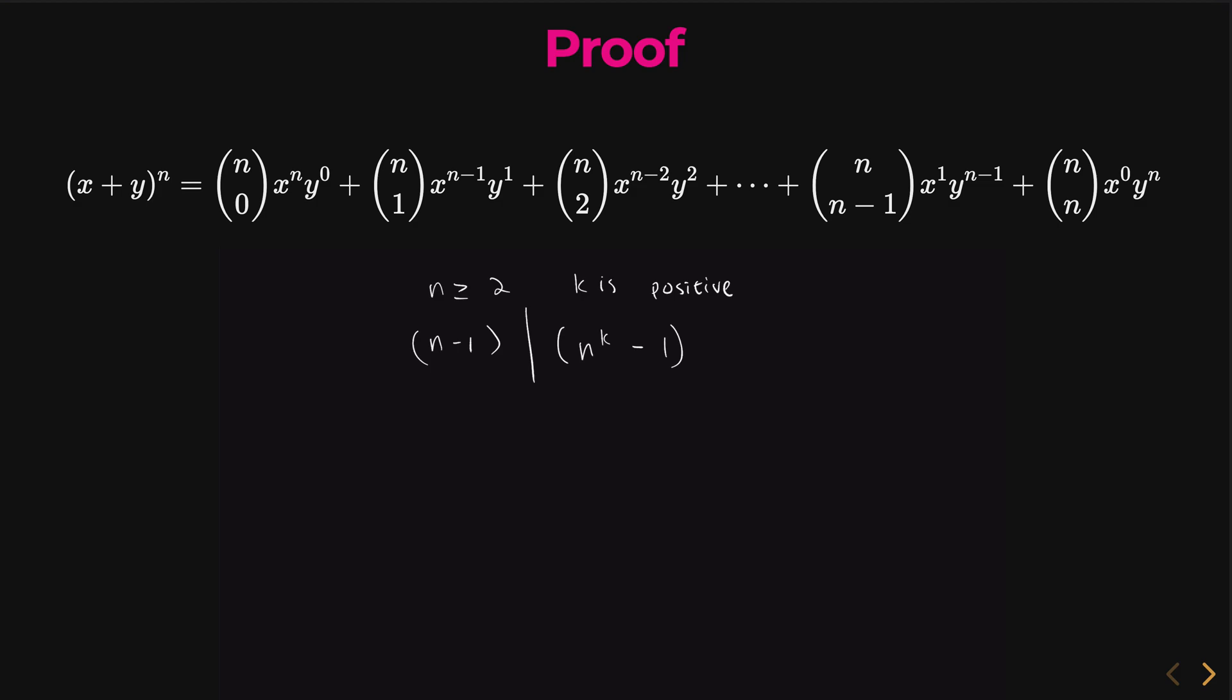Now, we can manipulate this a little bit to create a binomial. n essentially is just n minus 1 plus 1. The ones will cancel out, so that is true. Since this is true, we can also say that n to the k equals n minus 1 plus 1 all to the kth power. This is just, again, some algebra.